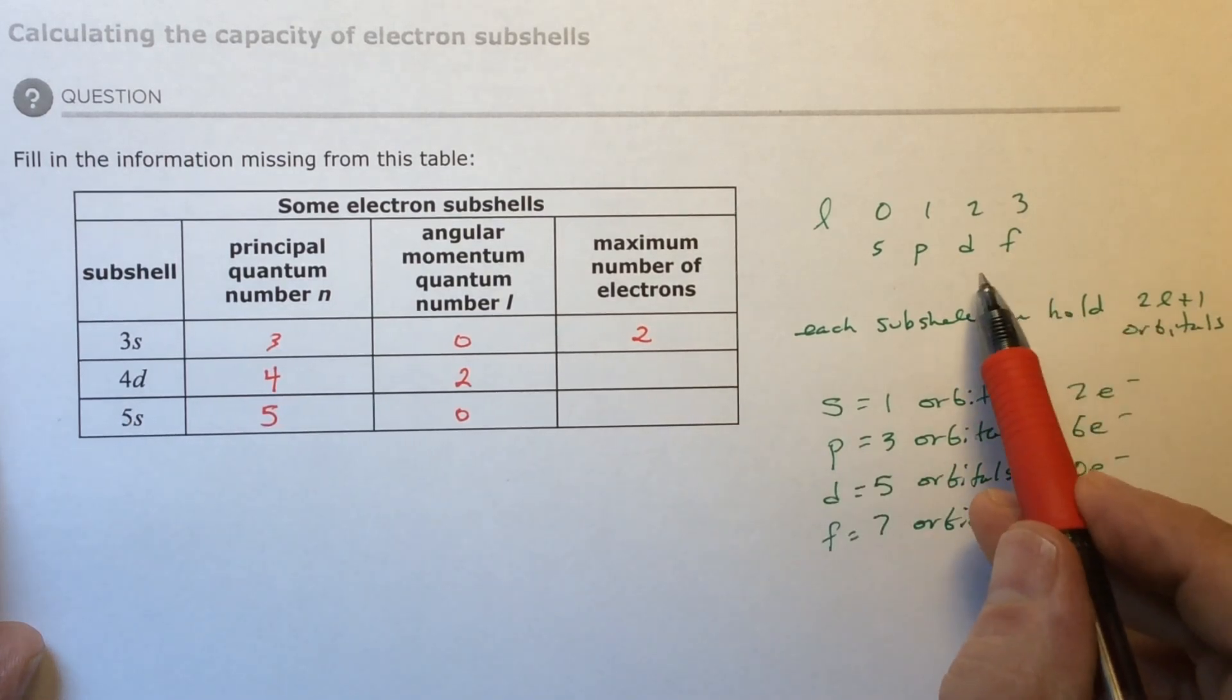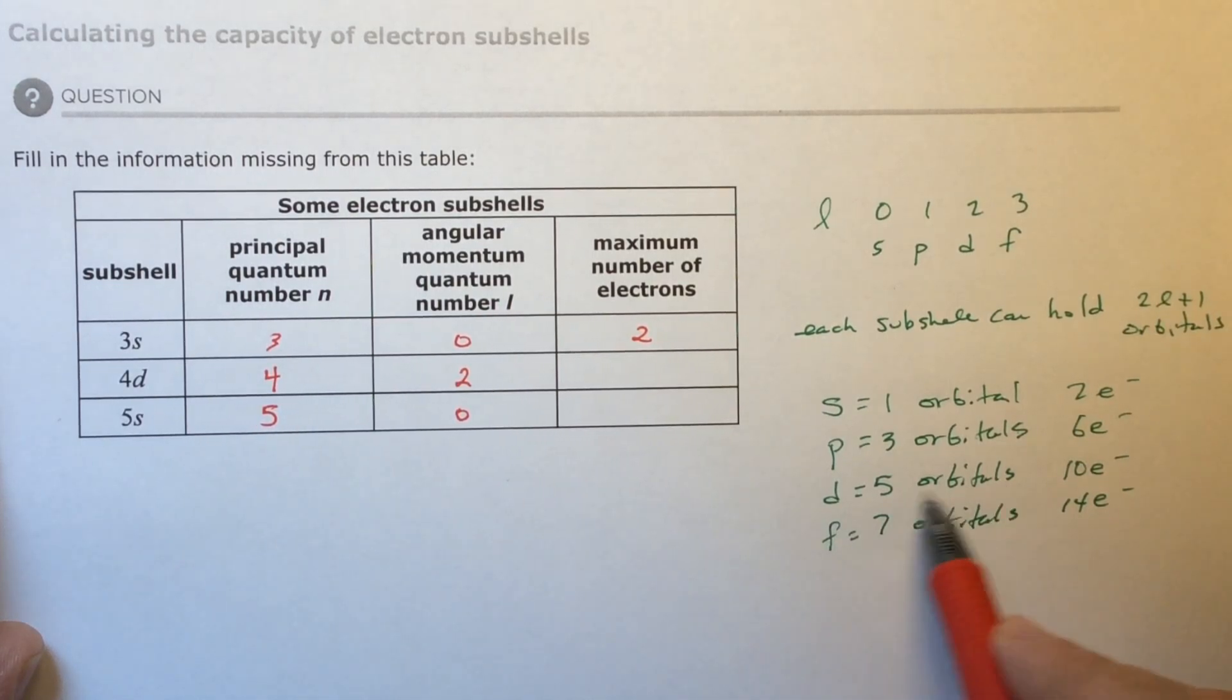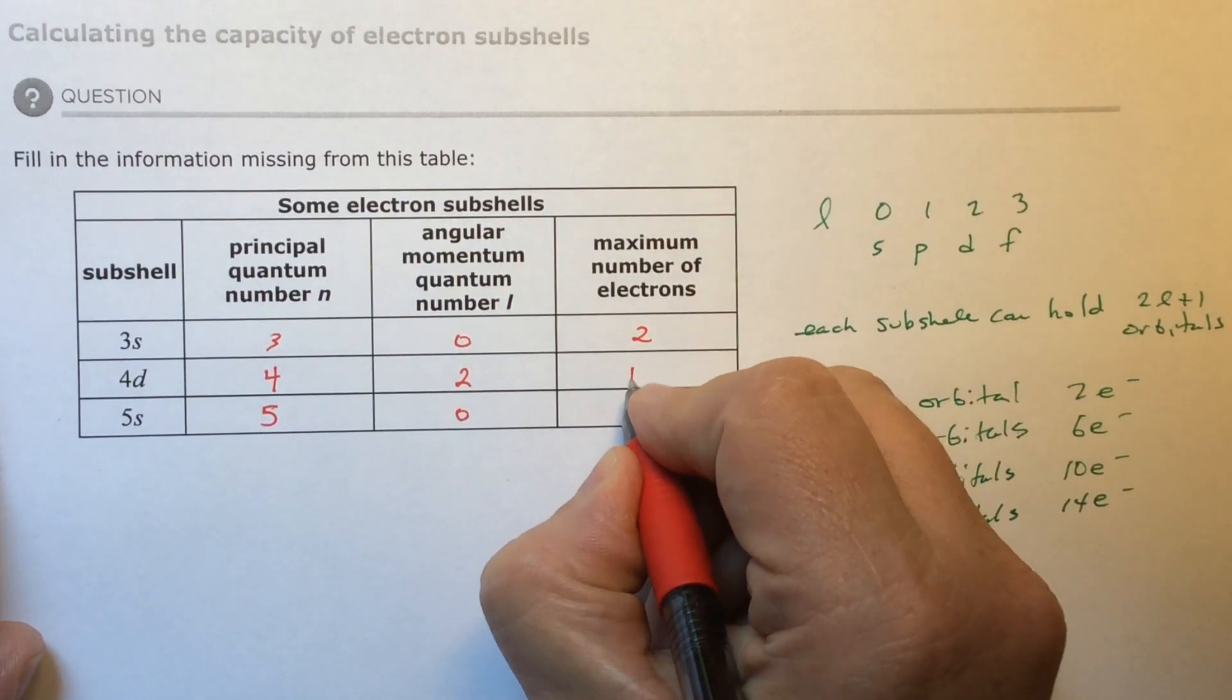The D, the D is going to be two times two is four plus one is five. That's five orbitals, two girls in each room. That's ten electrons total.